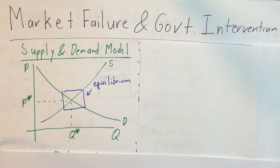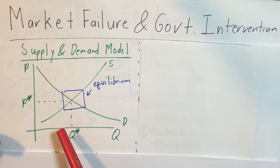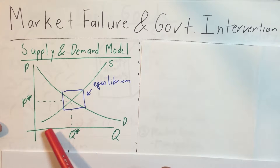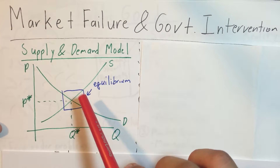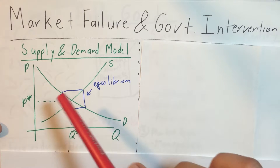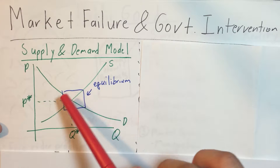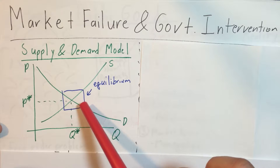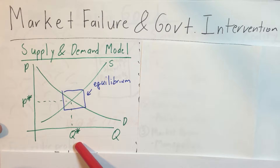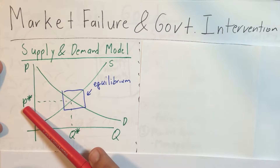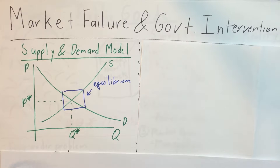Hi, my name is Michael. Welcome to my video on market failure and government intervention. Here we have a pretty typical supply and demand model. The supply curve is sloped upward, the demand curve is sloping downward, and where these two curves interact at Q* and P* is the equilibrium point — where both suppliers and demanders will supply and demand this quantity at this price.